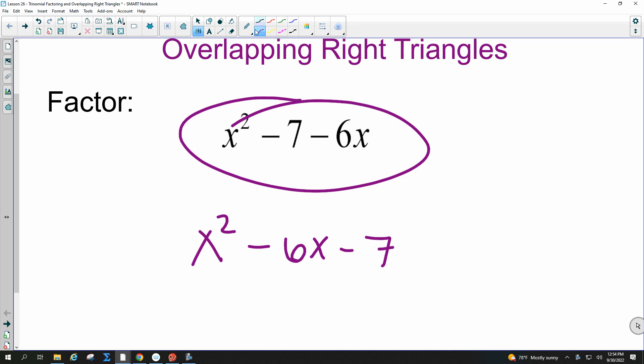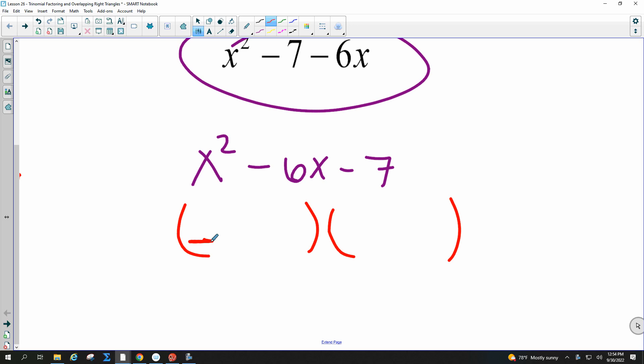When we factor, we're looking for two sets of parentheses. Which means, like, this times this, the first two terms, it's the opposite of foiling. Remember when we would multiply out a binomial times a binomial? It's the opposite of that.